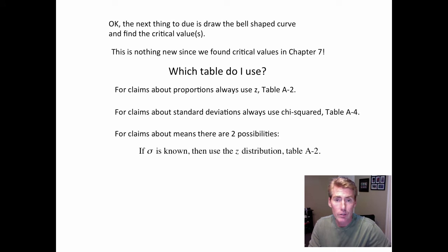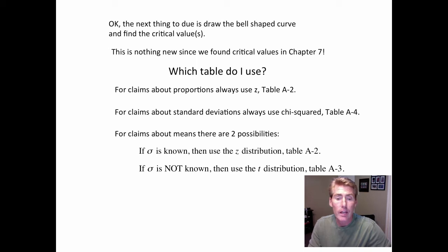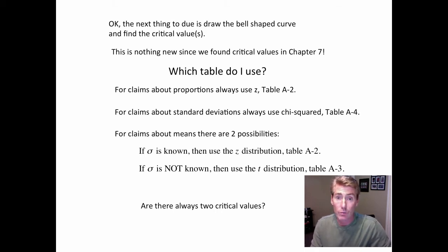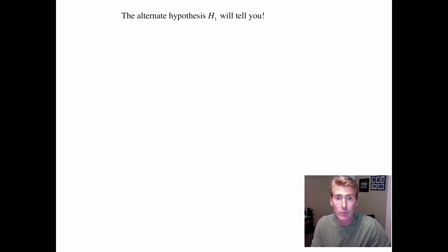For a mean, there are two possibilities. If sigma is known — meaning you know the standard deviation for the whole population — then you can use the z-distribution, Table A2. If sigma is not known and you only know the lowercase s, the standard deviation for a sample, then you use the t-distribution, Table A3. With hypothesis testing, unlike confidence intervals which always had two critical values, H1 tells you exactly what to do — that's part of the beauty of the structure. Once you have it down, it guides you through.